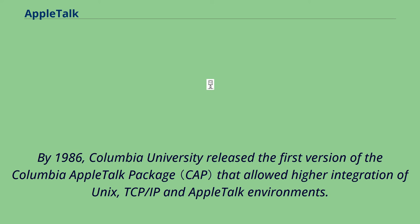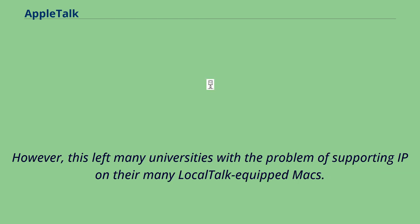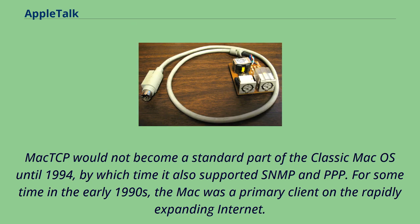In 1988, Apple released MacTCP, a system that allowed the Mac to support TCP/IP on machines with suitable Ethernet hardware. However, this left many universities with the problem of supporting IP on their many LocalTalk-equipped Macs, and it soon became common to include MacIP support in LocalTalk-to-Ethernet bridges. MacTCP would not become a standard part of the classic Mac OS until 1994, by which time it also supported SNMP and PPP. For some time in the early 1990s, the Mac was a primary client on the rapidly expanding Internet.